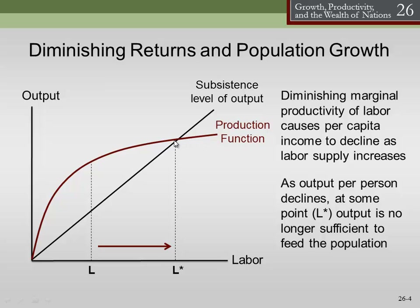What has happened is the Malthusian prediction didn't hold up very well because we had technological improvements. As we have technological progress, it pushes this L-star farther and farther out. The question today, when we talk about sustainability and sustainable growth, is how much farther can technology push this break-even point — where if our population goes beyond it, we can no longer feed them?